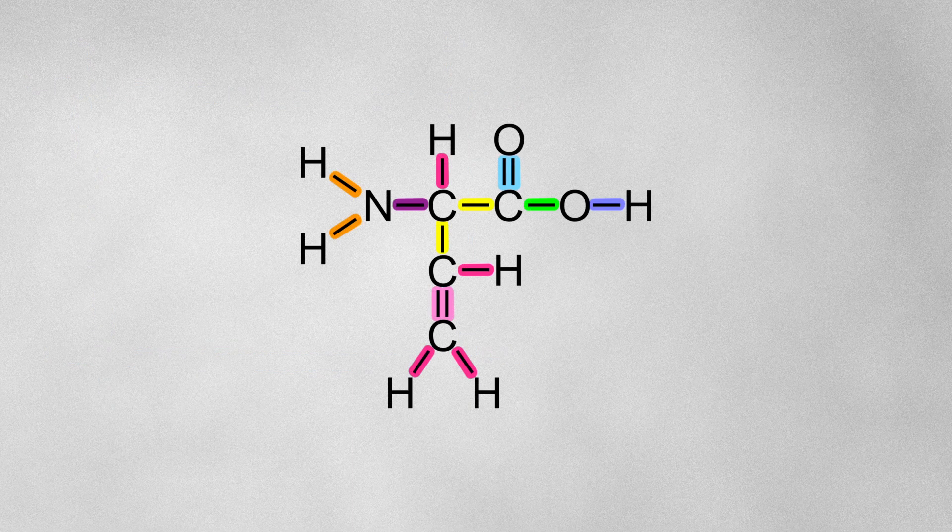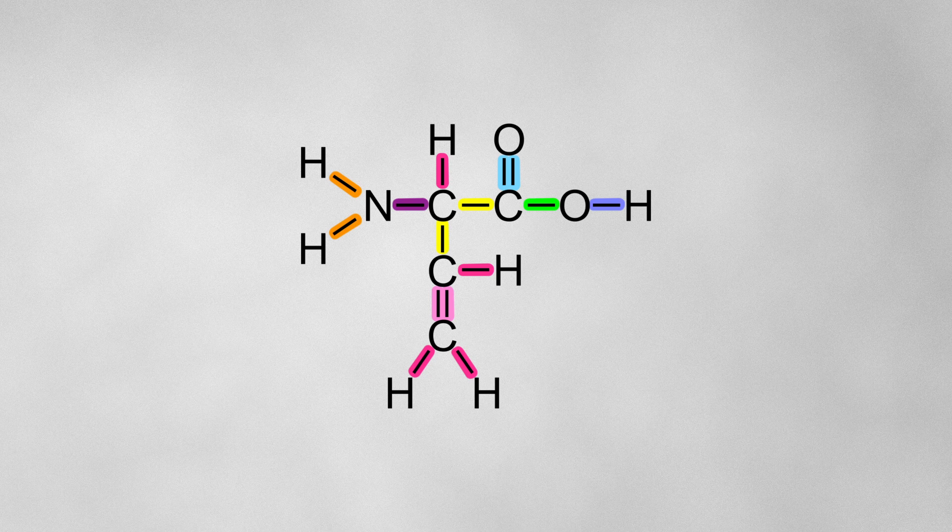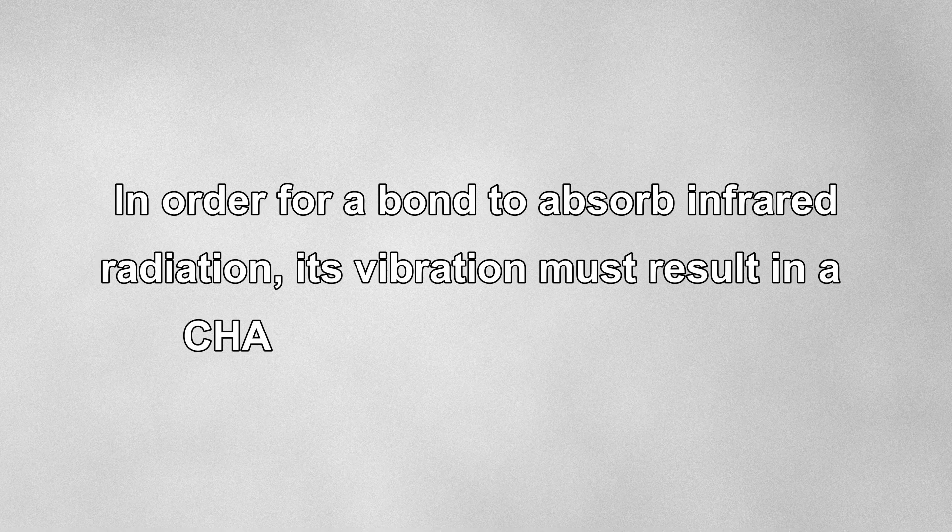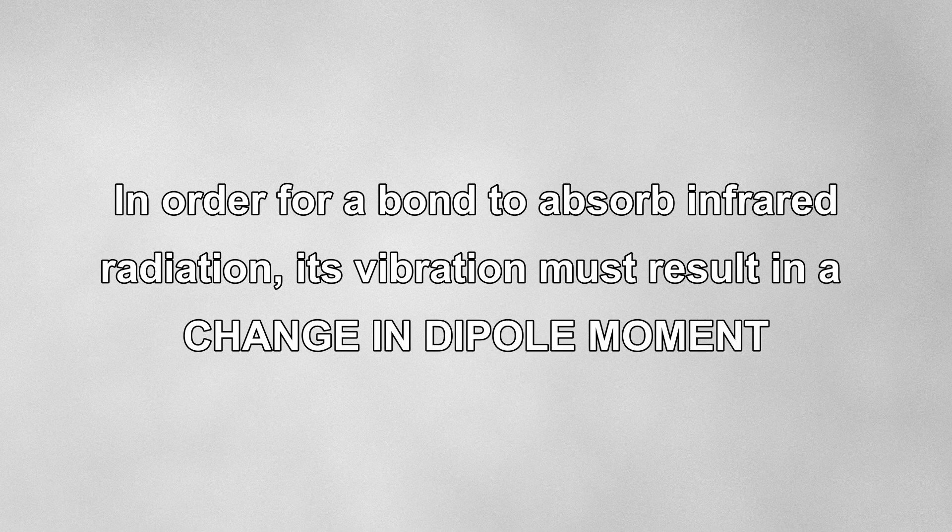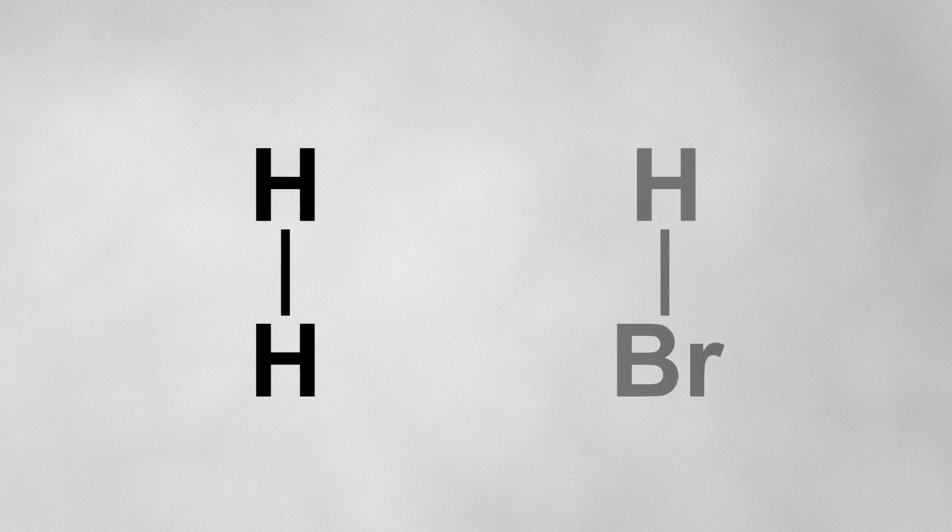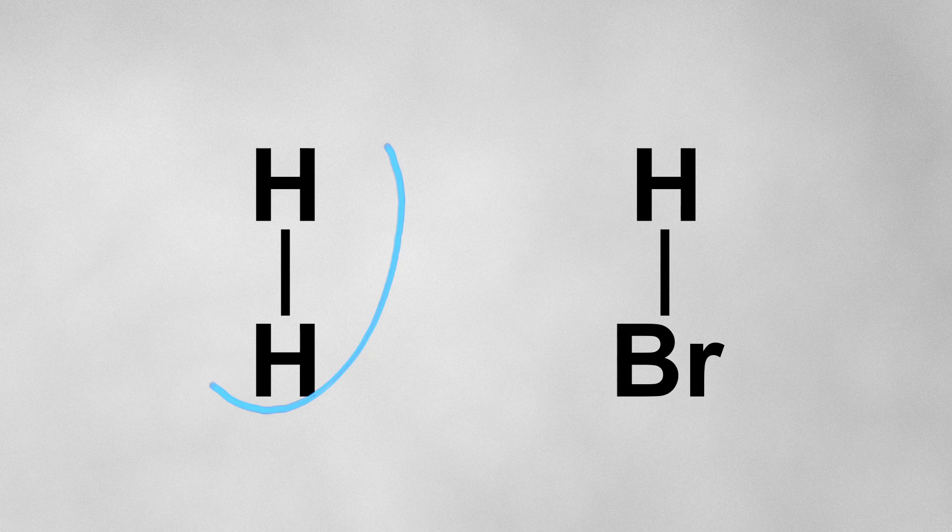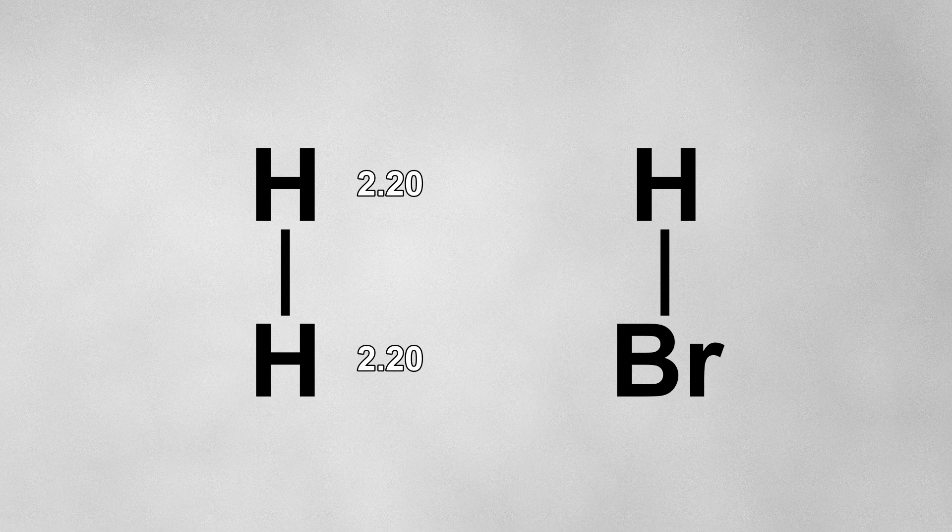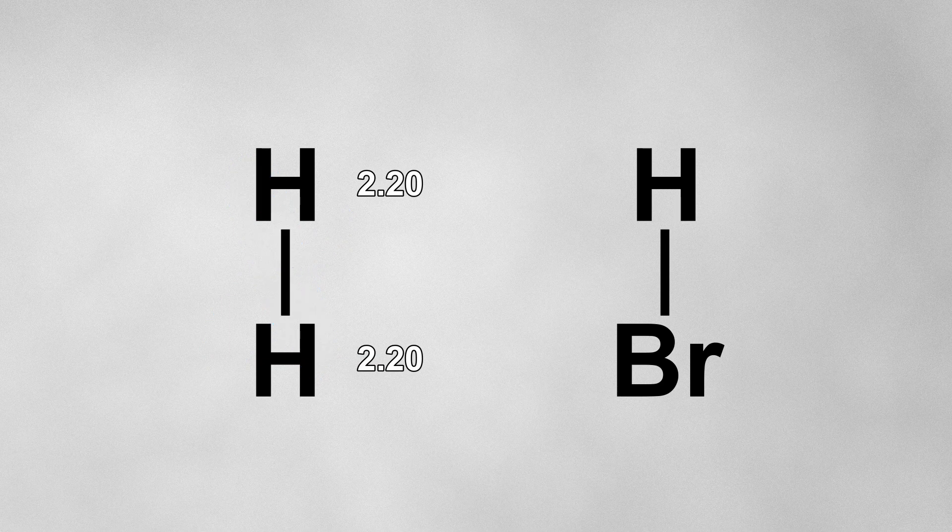Earlier, I mentioned that some bonds actually don't absorb infrared at all. The reason is, in order for a bond to absorb infrared radiation, its vibration must result in a change in dipole moment. Let's consider two diatomic molecules, hydrogen and hydrogen bromide. With the hydrogen molecule, the two hydrogen atoms are identical, and hence they have identical electronegativities. This means they both attract the bonding pair of electrons equally, and so there's no dipole across the molecule.